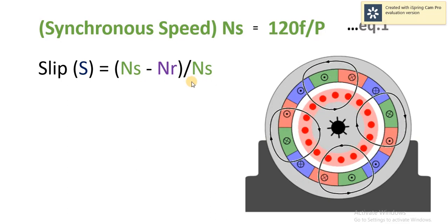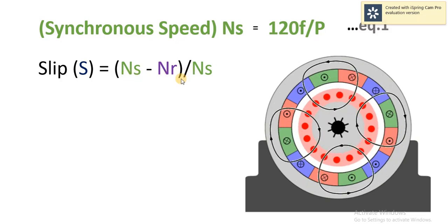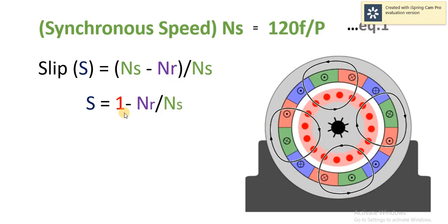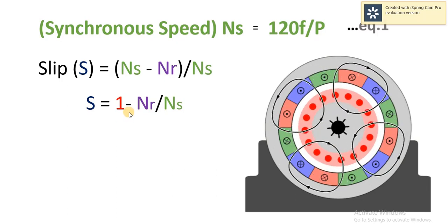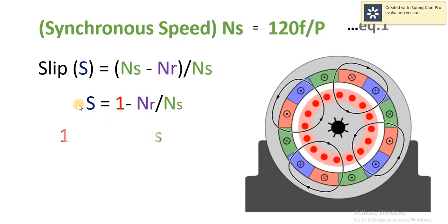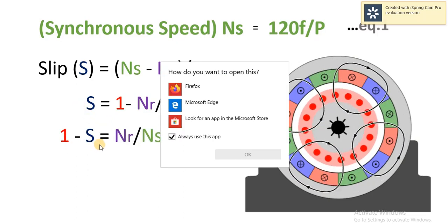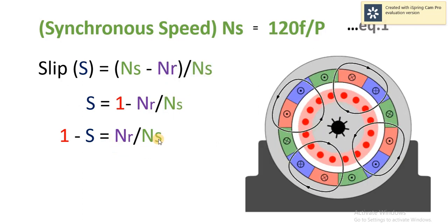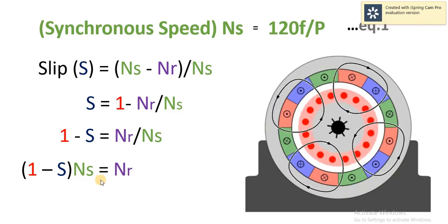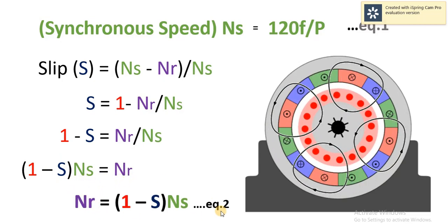Rearranging the equation of slip: NS/NS equals 1 minus NR/NS, which gives us 1 − S = NR / NS. Then multiplying NS to the left-hand side, we get (1 − S) × NS = NR, and this is equation number 2.